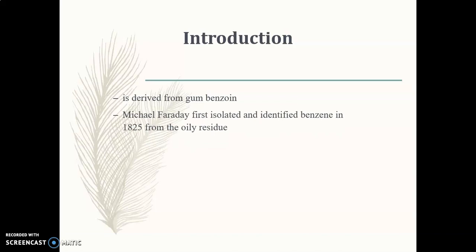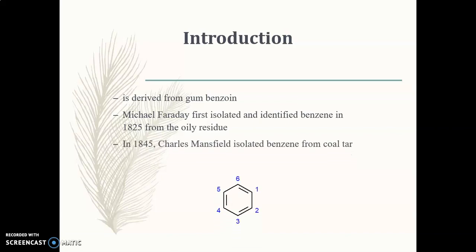In 1825, Michael Faraday was the first to isolate benzene, obtained from different oil residues — as I said, from benzoic acid. After 1825, in 1845, Charles Mansfield isolated benzene from coal tar. Coal tar is still today one of the prominent sources of benzene. After four years from isolation from coal tar, Charles started the commercial production of benzene. Today, about 20% of benzene is produced from coal tar.